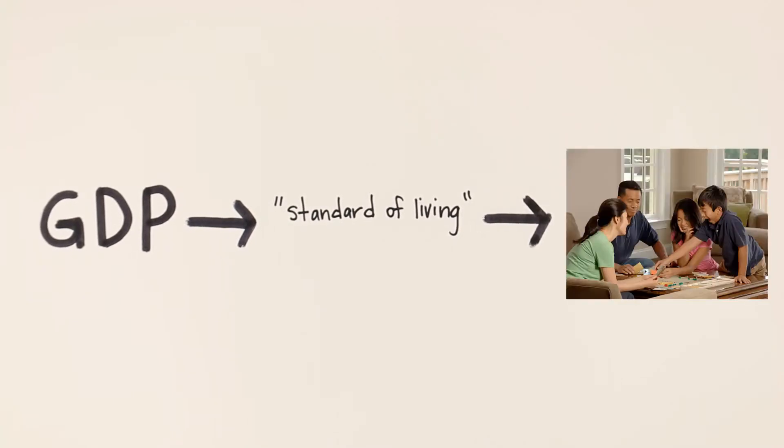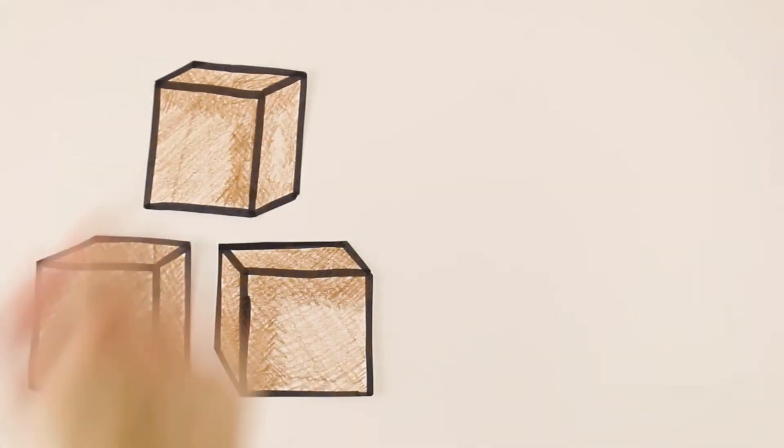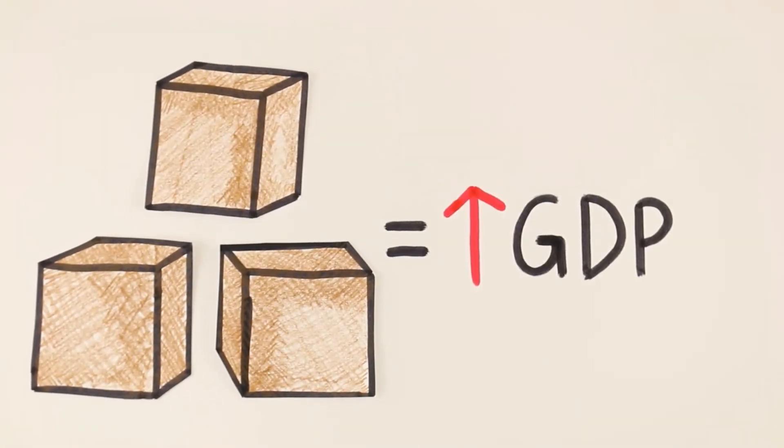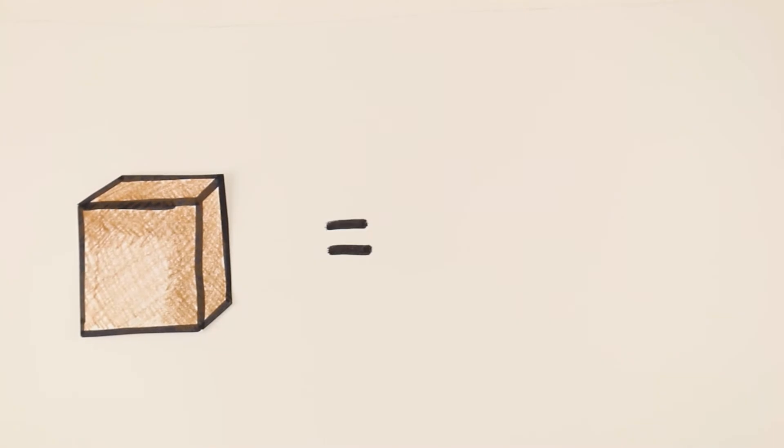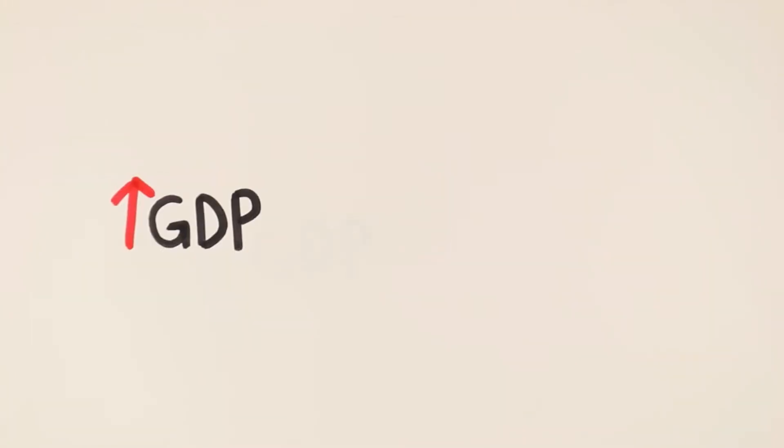GDP is the most common way to measure a nation's standard of living, or in other words, how well people are considered to be living in that country. A nation that produces many goods and services has a higher GDP than a nation that produces few goods and services. And the nation with the higher GDP is usually thought to have a higher standard of living.